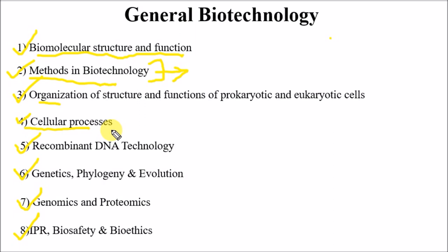The cellular processes chapter covers the central dogma model — DNA replication, transcription, and translation. These are very important topics. You should also study the various enzymes and inhibitors involved in the central dogma, translational process, and replication process. Cell signaling is also a very important topic in cellular processes.